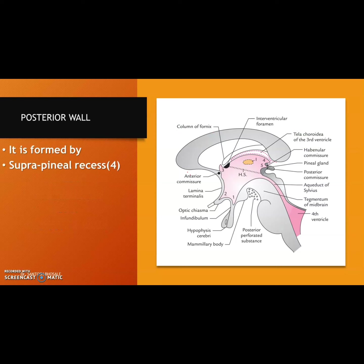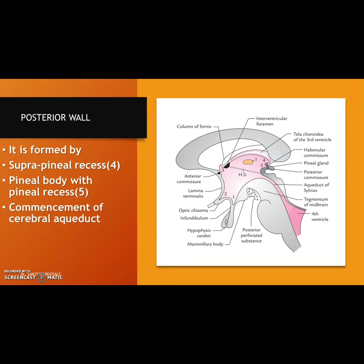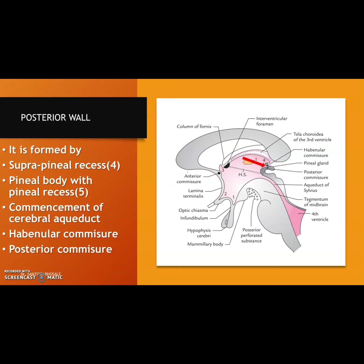The posterior wall is formed by the suprapineal recess, the pineal body with the pineal recess, and the commencement of the cerebral aqueduct. There is a habenular commissure in the upper lamella of the stalk of the pineal gland, and a posterior commissure in the lower lamella of the stalk of the pineal gland.